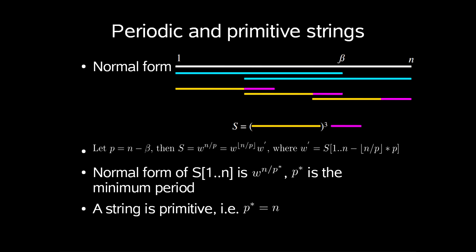First we'll take a look at periodic and primitive strings. Any string S[1..n] can be written in its normal form. Let p equals n minus beta, then S equals w to the power of n divided by p, is w to the power of n divided by p rounded down.